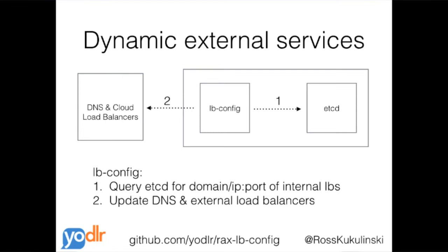One of the problems we had was how do we actually get our customers to be able to access this scalable system? As Rackspace customers, or if you're using Amazon, you can use the ELB platform. Using the same idea of service discovery, we're able to dynamically reconfigure our DNS and cloud load balancers, storing which DNS records and internal load balancers map to which external DNS records, and dynamically updating our external load balancers in real time based on internal changes. That allows us to scale our internal system very easily.